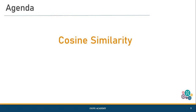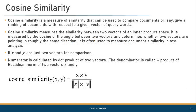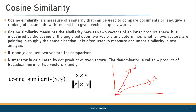Now let us look at cosine similarity. Instead of a bookish definition, I will give a pictorial representation. Any document can be represented as a vector in an n-dimensional space. If there are two documents A and B, we identify the cosine theta value. If they are close to each other, they are close to identical; if theta is large, they are non-identical. The formula uses the dot product of the two vectors divided by the product of their Euclidean norms.